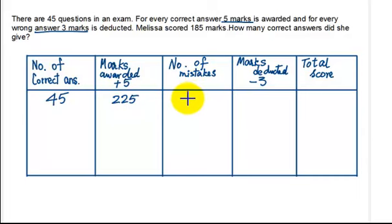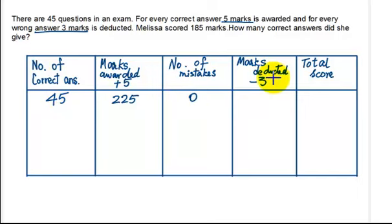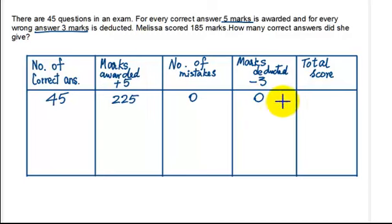The number of mistakes being made: since she got all the questions correct, there are no mistakes, so 0 mistakes. Marks deducted: for every wrong answer, 3 marks are deducted. In this case, no mistakes, so 0 marks deducted. And the total score now is 225.